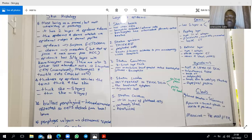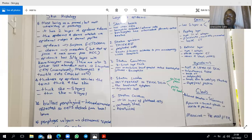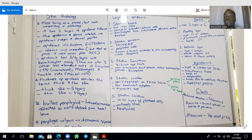The hair follicle has basically four parts: an infundibulum, the isthmus, a follicular bulge, and an inferior segment. If you look at the matrix, it divides into a keratin-producing region for the hair, then the internal root sheath. The internal root sheath has three layers: the Henle's layer, the Huxley's layer, then an internal root cuticle.